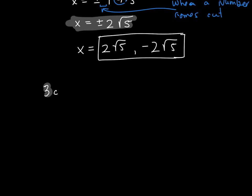3c. So this 3c is 2x squared plus 72 is equal to 0. Now, first thing I want to do is subtract 72 from both sides. When I get this, I have 2x squared is equal to negative 72.